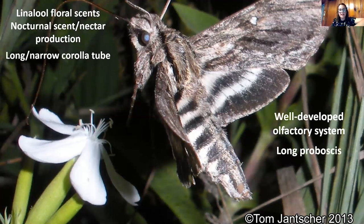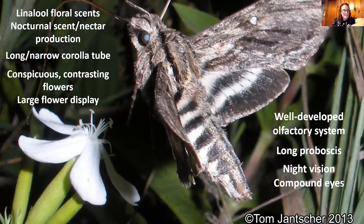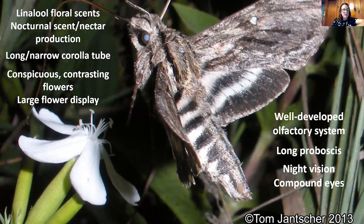Moth-pollinated plants usually have a long narrow corolla tube, and these flower-visiting moths typically have a long proboscis. We also have conspicuous contrasting flowers that are typically white or lighter in color, and moths have developed night vision with compound eyes sensitive to low light levels so they can see these flowers. Usually the flowers have a large flower display — either one large solitary flower, many large solitary flowers, or a lot of small flowers — making it easier to see from long distances.